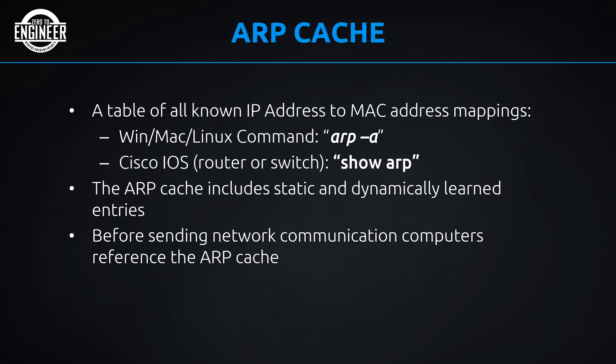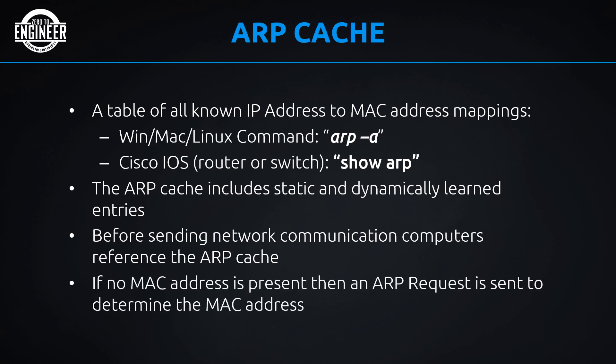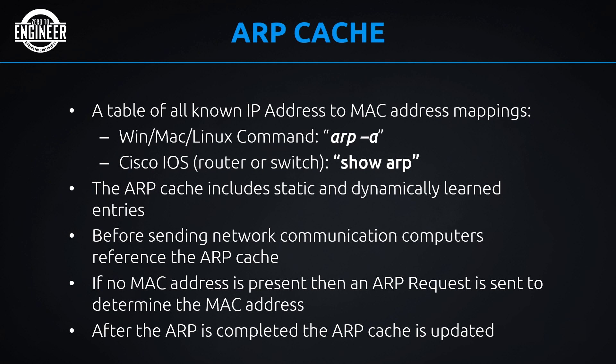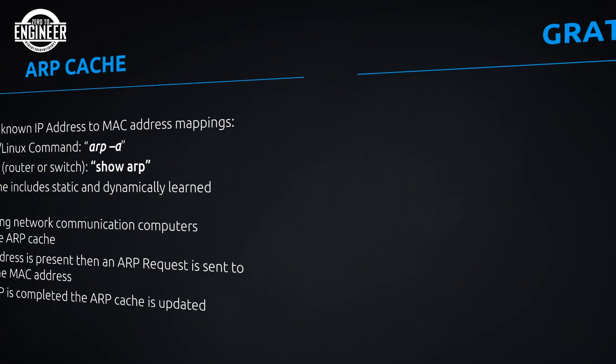Before sending network communication, computers first reference their ARP cache to see if they already have the MAC address. If they don't, they send an ARP request to determine the MAC. After the ARP is completed, they update the ARP cache. We'll see this entire process in a detailed interactive diagram at the end of the presentation.